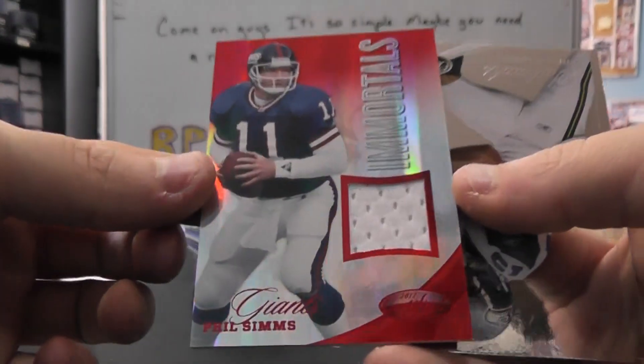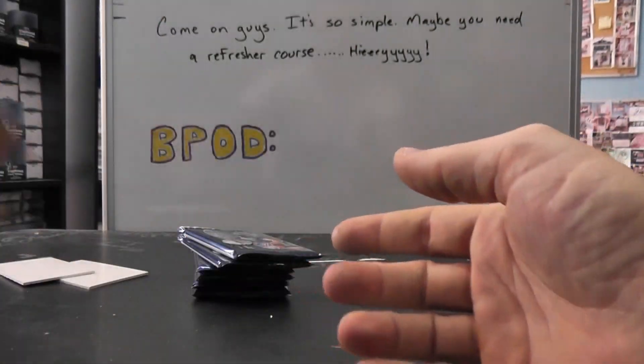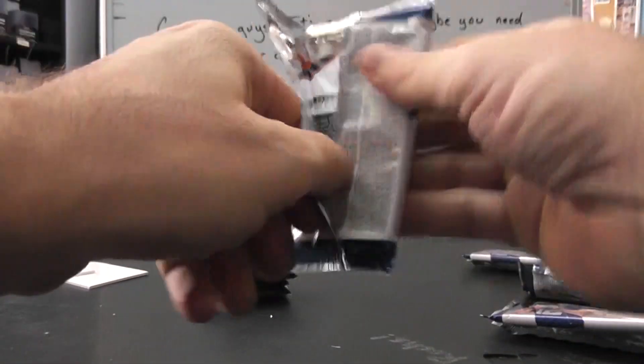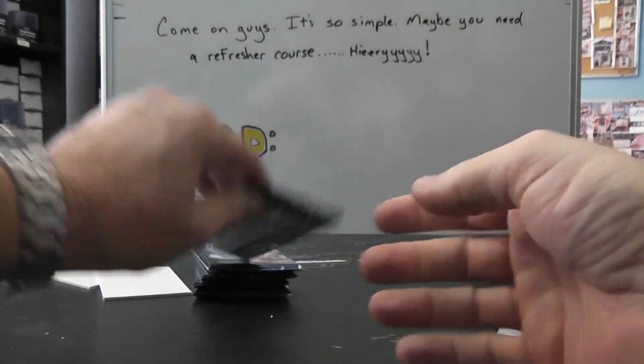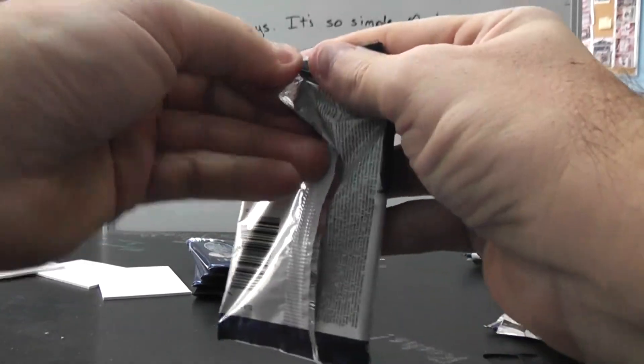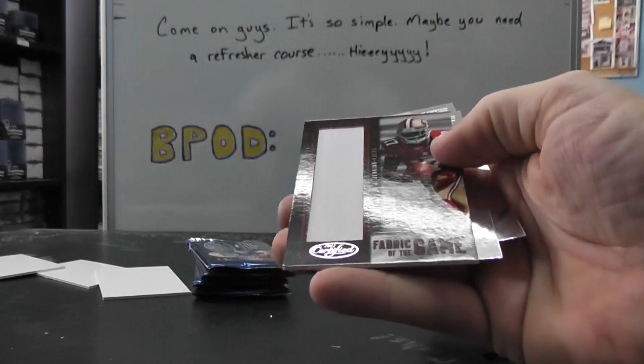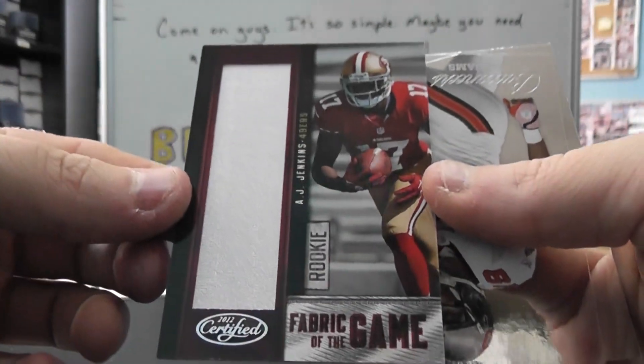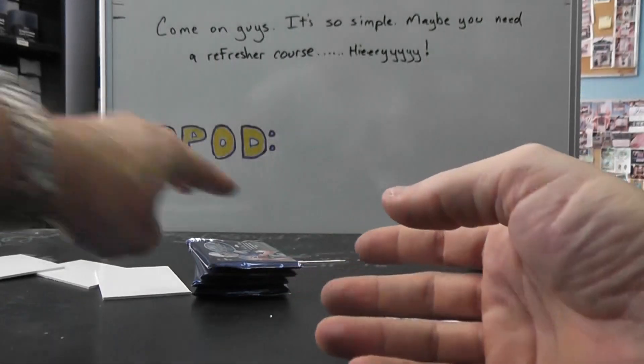Another jersey, Phil Simms Immortals Red, numbered at $1.99. Fred Williamson, $9.99. Fabric of the Game, AJ Jenkins Jumbo jersey, that's $1.99. All jerseys thus far.